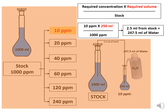If you need 250 ml of the required volume, in this formula we use 10 ppm as the required concentration multiplied by the required volume of 250 ml, divided by the stock. The result is 2.5 ml. Taking 2.5 ml from the 1000 ppm stock and mixing with 247.5 ml of water makes it up to 250 ml, giving 10 ppm of the required concentration.